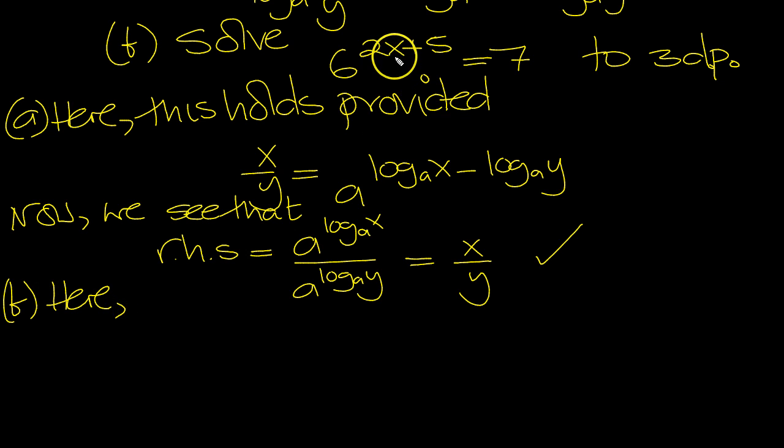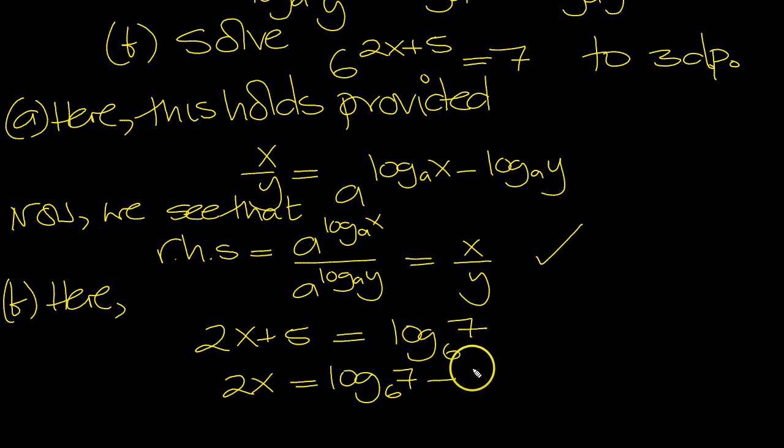So let's unwrap the log and write the log form from this indicial form, 2x plus 5 drops down to ground level, when this 6 swings underneath and becomes the base number for the log of 7. So log of base 6 of 7, so 2x equals log 6 of 7 minus 5, move the 5 over.